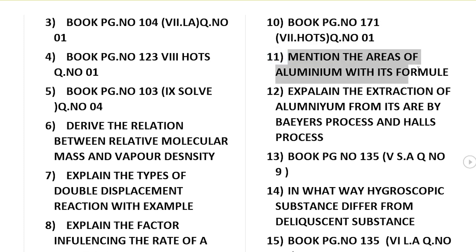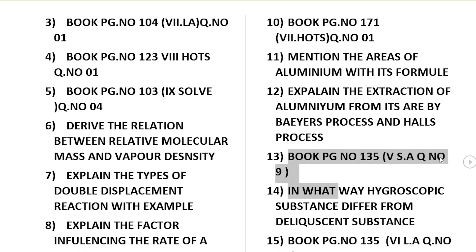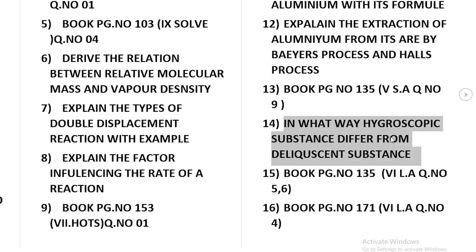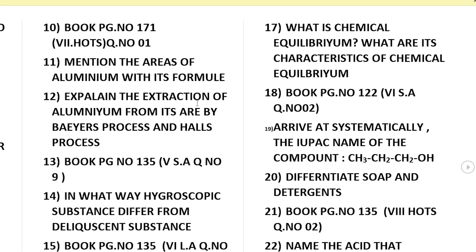Mention the ores of aluminium with their formulae. Explain the extraction of aluminium from its ore — Bayer process and Hall-Héroult process. What is a hygroscopic substance? What is chemical equilibrium? What are the characteristics of chemical equilibrium?